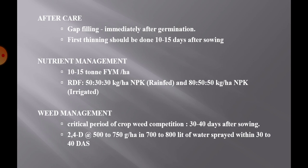Weed management: 30 to 40 days after sowing is the critical period of crop-weed competition. During this period, keep the field free from weeds by hand weeding and hoeing. We can also go for herbicide application using 2,4-D at the rate of 500 to 750 grams per hectare in 700 to 800 liters of water, applied within 30 to 40 days after sowing.